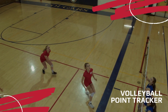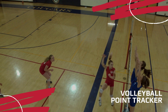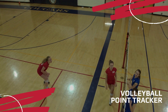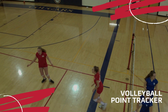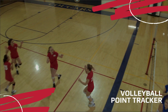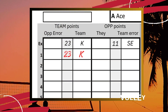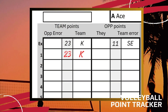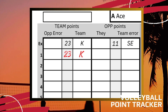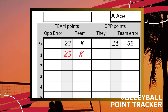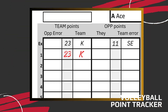As the match starts, identify who scores the point and for what team. In this example, we will have our own attacker whose number is 23 get a kill point for our team. You will place a K for kill in the third column on row 1, which stands for point 1. You can also identify who got the point by placing 23 in the second column of the same row. So now the score is 1 for us and 0 for the opponents.